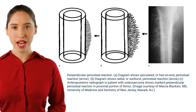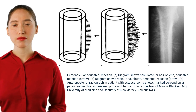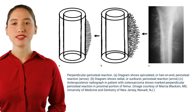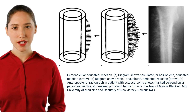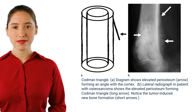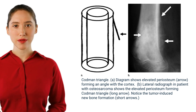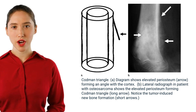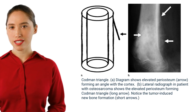Perpendicular periosteal reaction: diagram shows spiculated or hair-on-end periosteal reaction, and radial or sunburst periosteal reaction. Anteroposterior radiograph in a patient with osteosarcoma shows marked perpendicular periosteal reaction in the proximal femur. Codman triangle: diagram shows elevated periosteum forming an angle with the cortex. Lateral radiograph in a patient with osteosarcoma shows the elevated periosteum forming a Codman triangle (long arrow) with tumor-induced new bone formation (short arrows).